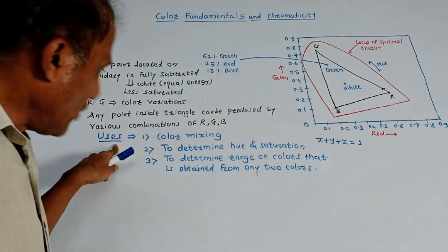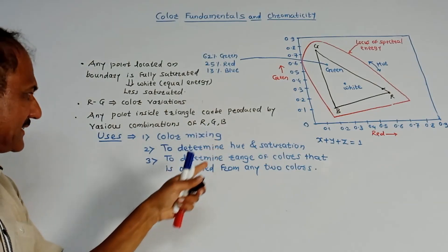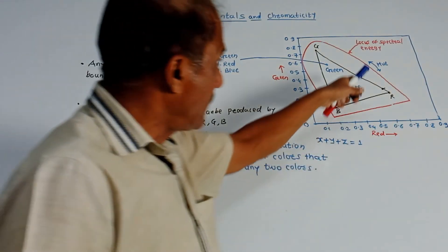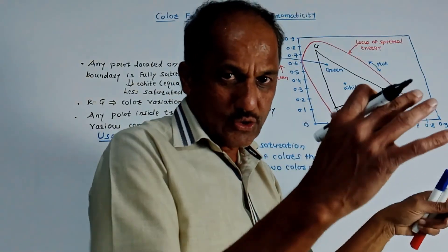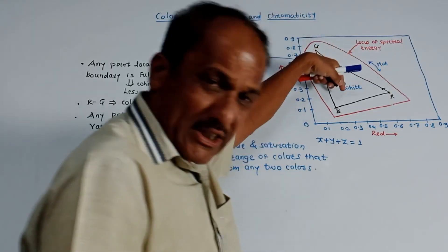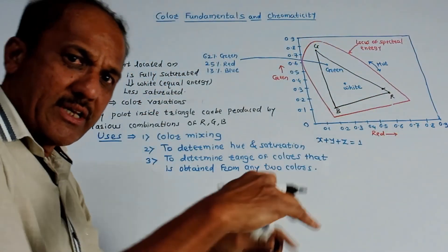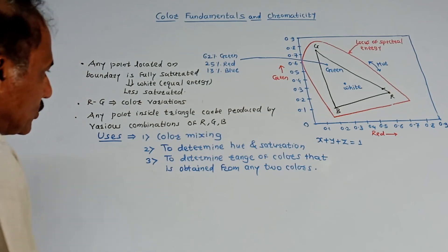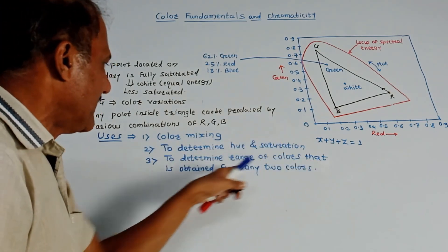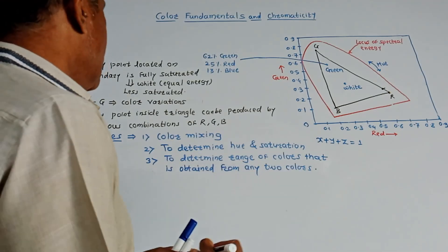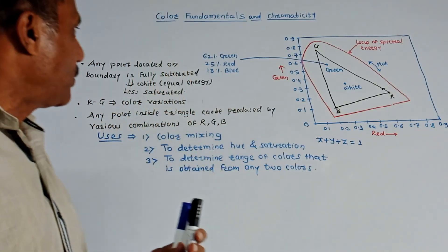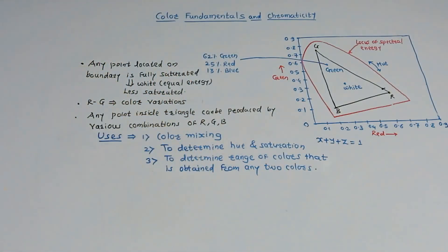What are the uses of this chromaticity diagram? It is used for color mixing, to determine hue and saturation — as the point moves along the boundary, hue goes on changing, and as the point moves from the boundary towards the white or equal energy point, saturation goes on decreasing — and to determine the range of colors obtained from any two colors. So this is about the chromaticity diagram, and that's it for today's session. Thank you, thanks a lot for watching this video.